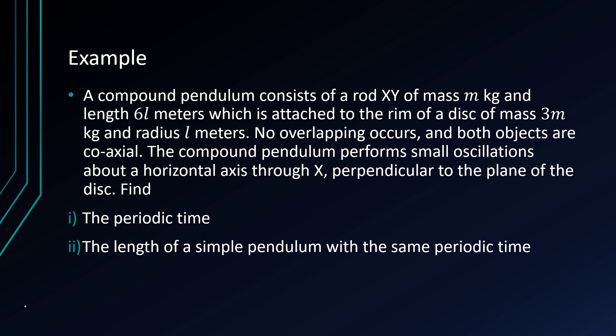So a compound pendulum consists of a rod XY of mass m and length 6l which is attached to the rim of a disk of mass 3m and radius l.